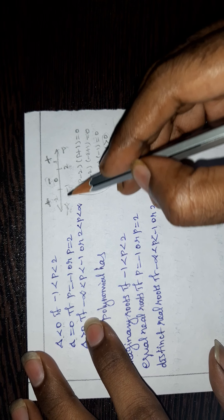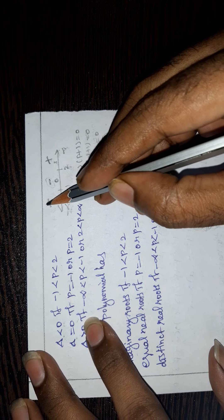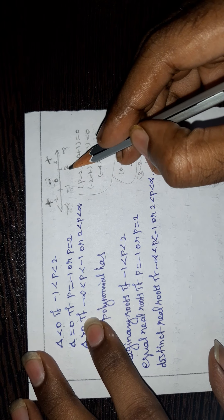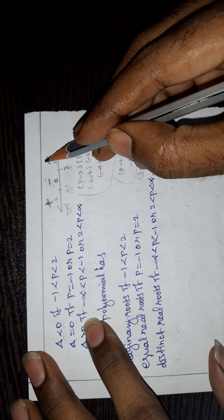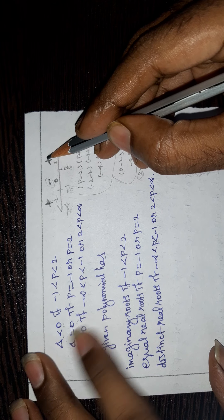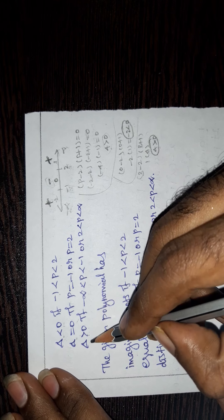From minus infinity to minus 1 and from 2 to infinity, it is positive value, so delta > 0.